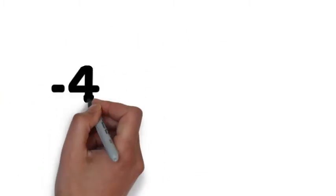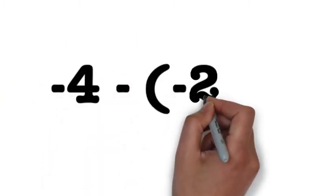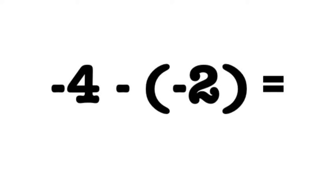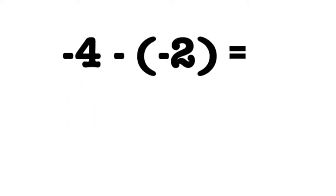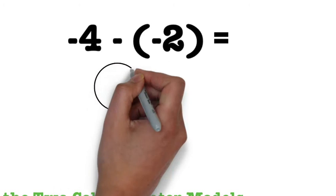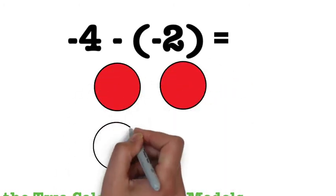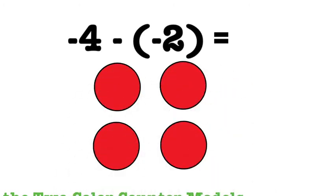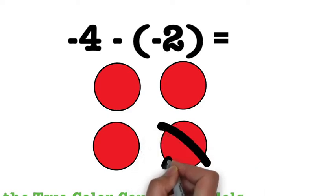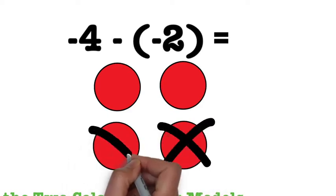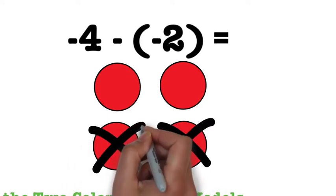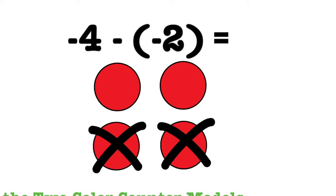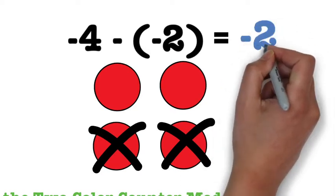Let's look at a second example. This time our problem is negative 4 minus negative 2. Notice that both of these numbers are negative. To set this problem up, we will need four red or negative counters. The problem is asking us to remove two negatives. Since both numbers are negative, we can easily take two away, which will result in an answer of negative 2.